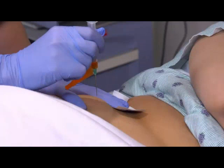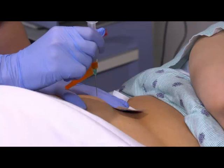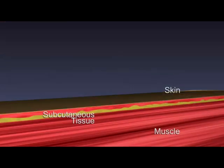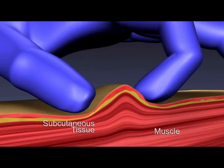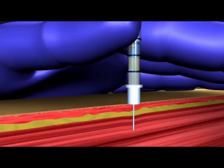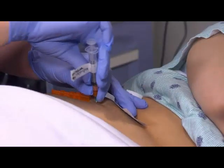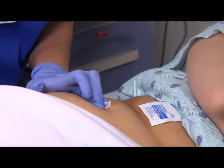Hold the syringe with the thumb and forefinger of your dominant hand as if it were a dart. Remind your patient to try and relax. Place the ulnar side of your non-dominant hand just below the injection site and pull the patient's skin laterally about 1 to 1½ inches or 2½ to 3½ centimeters. Hold this position until you've inserted the needle. If the patient has little muscle mass, grasp the body of the muscle between your thumb and forefinger. With your dominant hand, quickly pierce the muscle at a 90-degree angle to the skin. Inject the medication slowly at a rate of 1 milliliter every 10 seconds. Wait 10 seconds and smoothly withdraw the needle, then engage the needle safety.